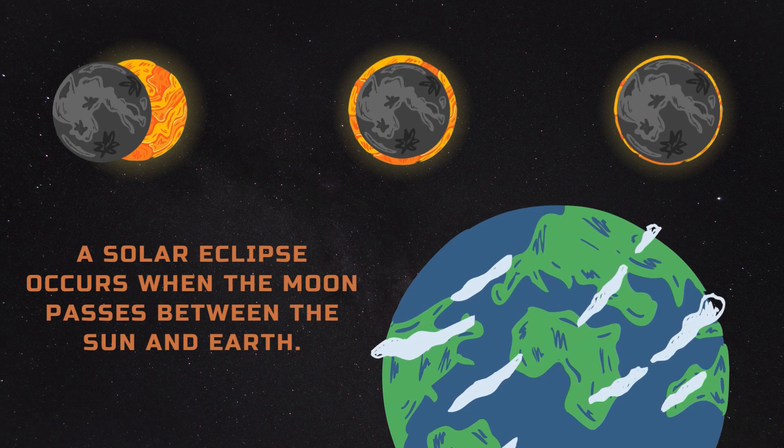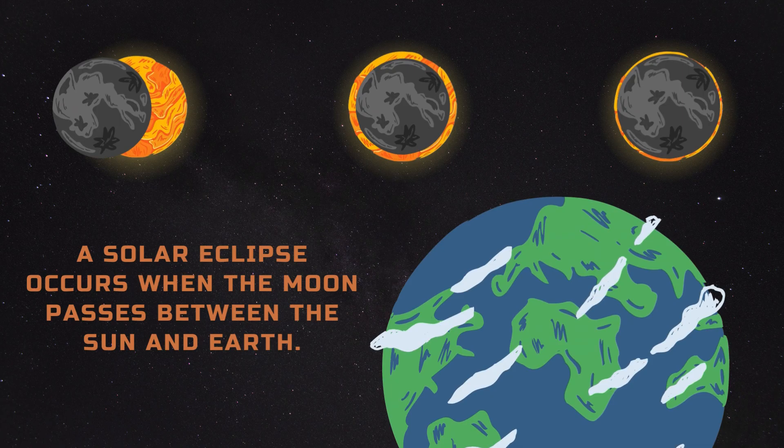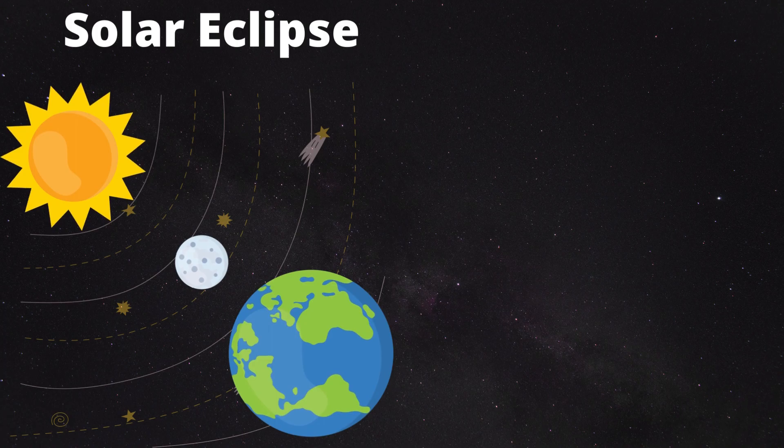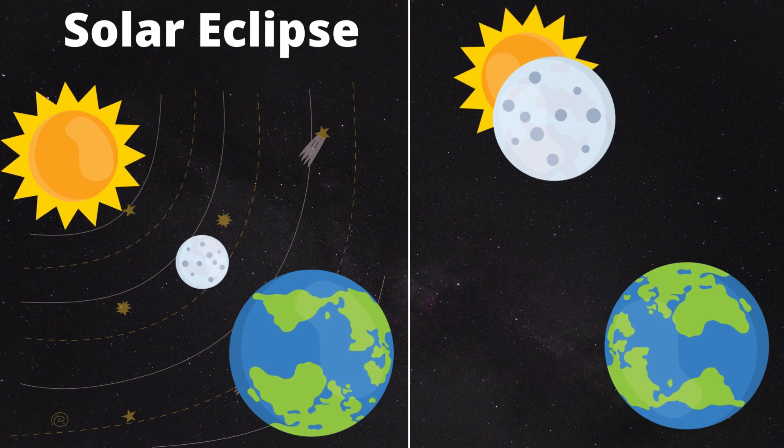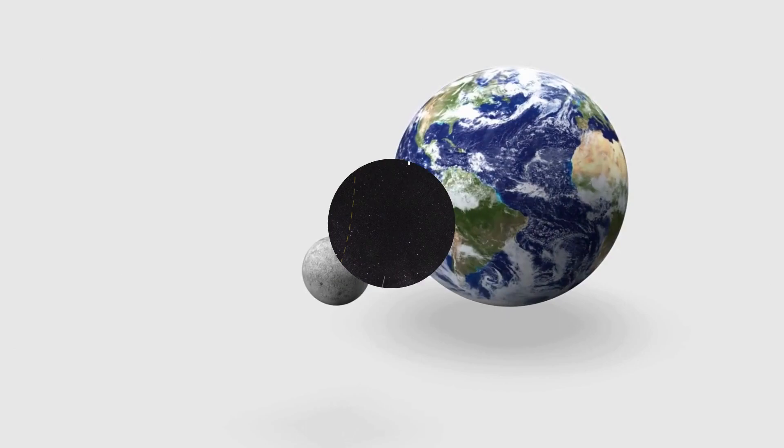A solar eclipse happens when a new moon moves between the earth and the sun, temporarily obscuring the sun's light from reaching the earth. Even though the sun is 400 times larger than the moon, it's also 400 times further away from the earth than the moon is. This creates a unique celestial alignment where the sun and the moon appear almost the same size in the sky when viewed from earth.